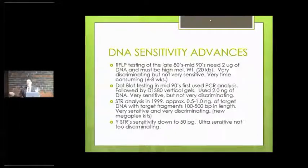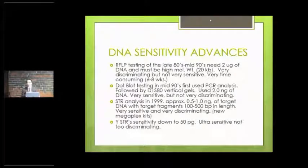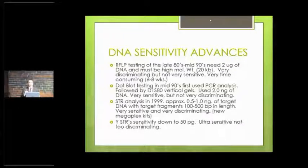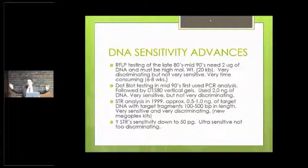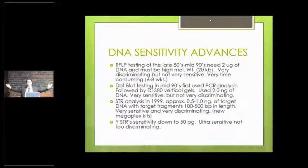When we started back in the mid-80s, when Alec Jeffries started this out, we needed two micrograms of DNA — that would be a bloodstain about the size of a nickel or quarter. The other thing I want to talk about is the size of the fragments of DNA that we looked at. We needed pieces of DNA that were 20,000 bases long, or 20 kilobases long. Today we're looking at pieces that are only about 300 or 200 bases long — down to pieces that are only about 100 bases long.